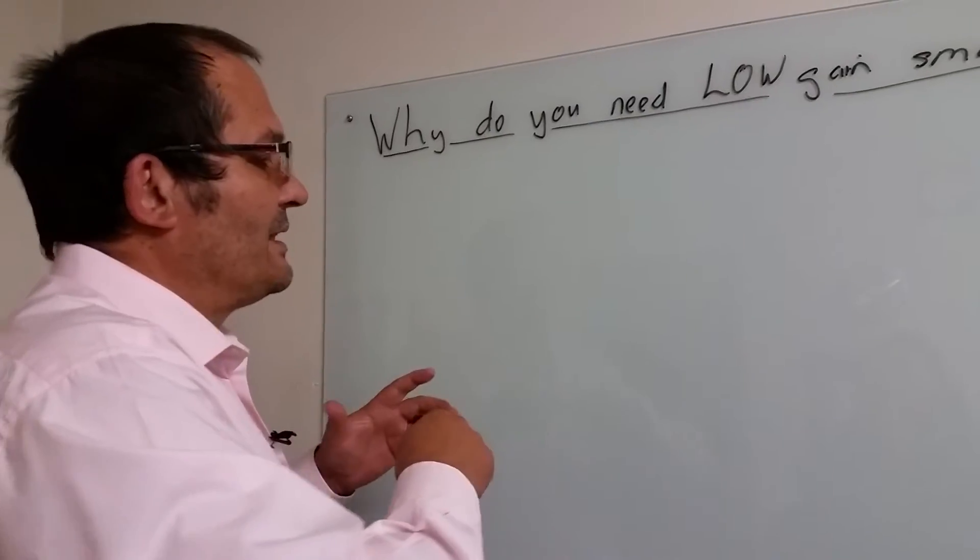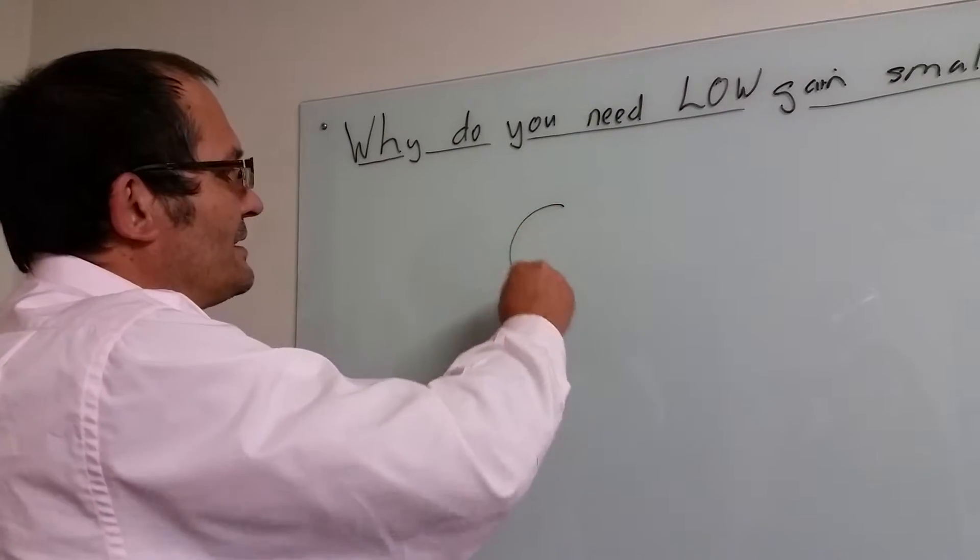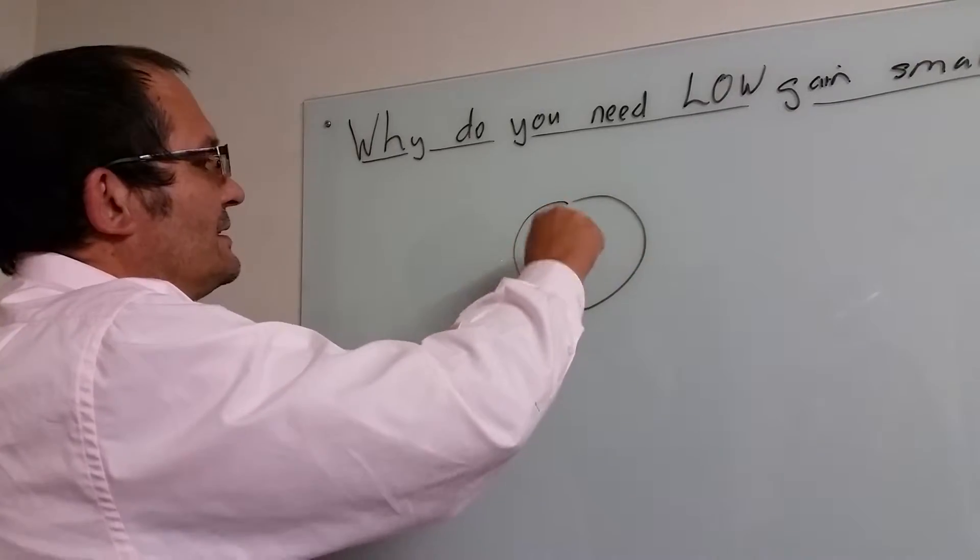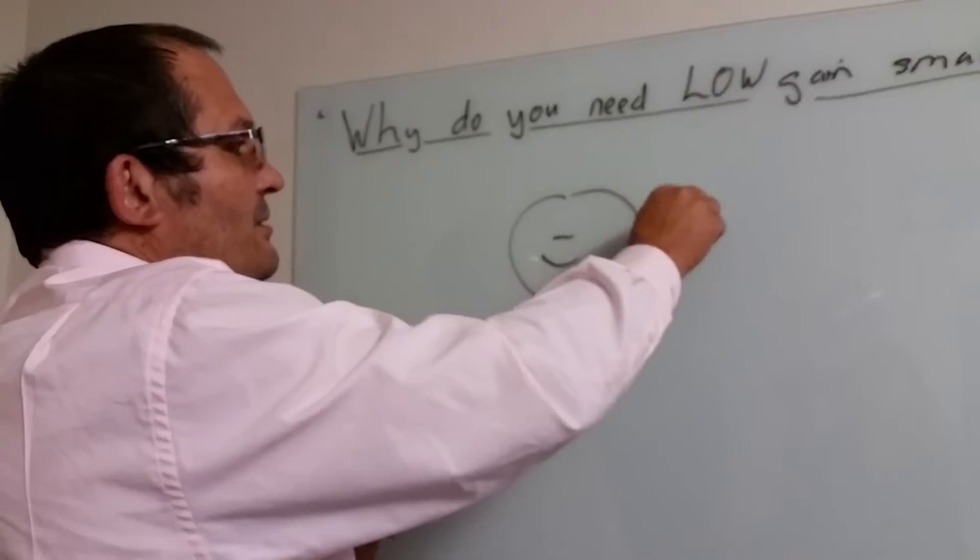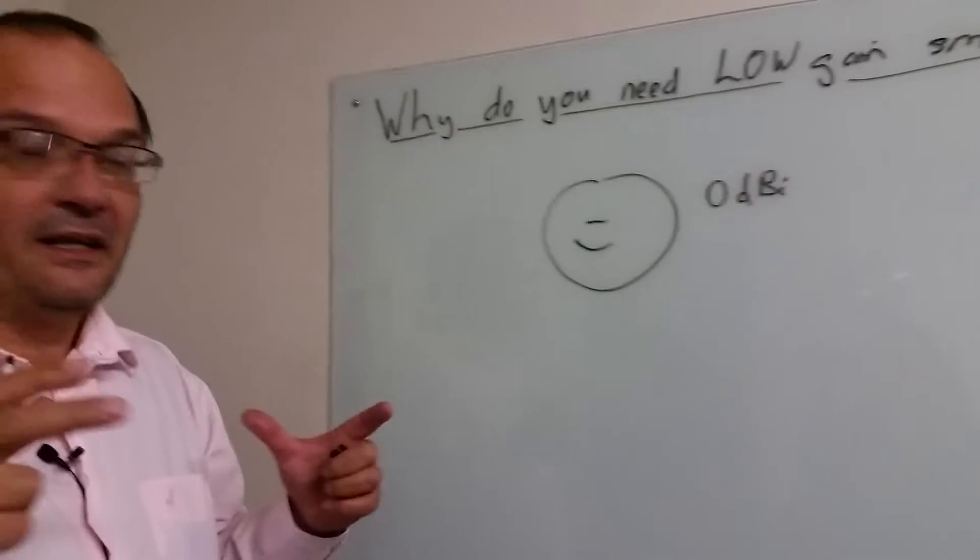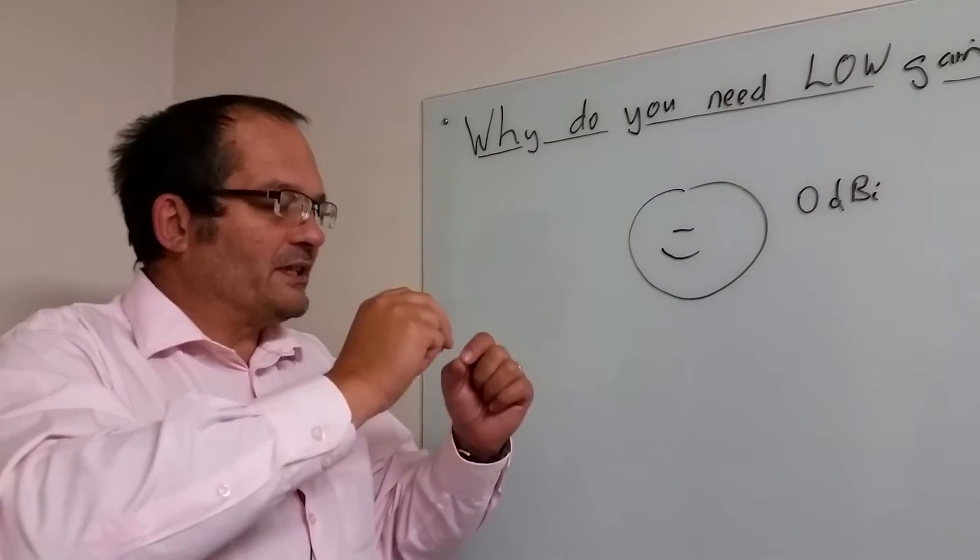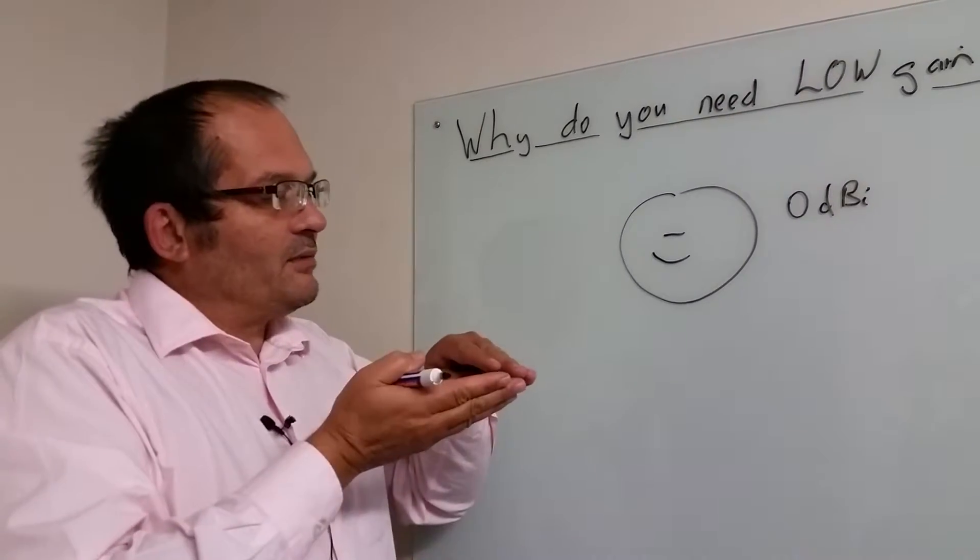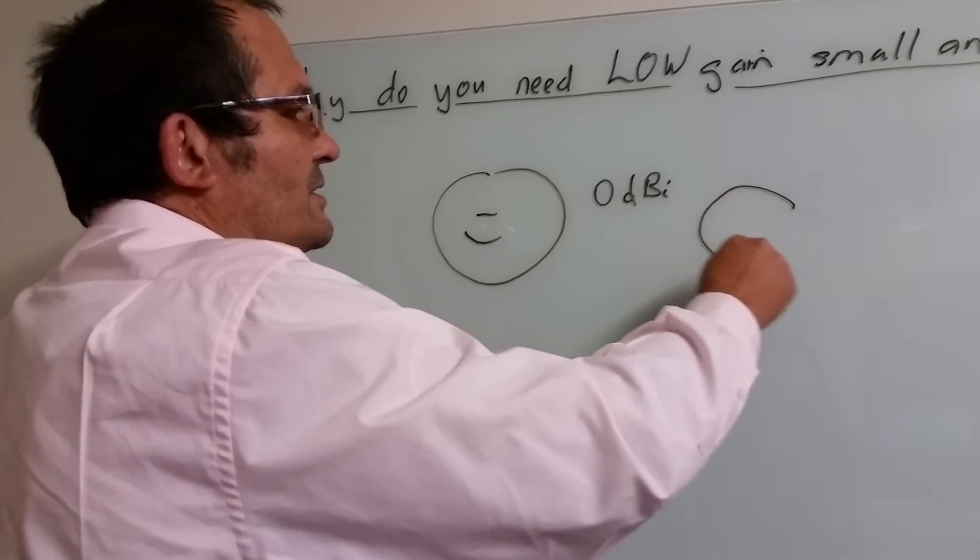The reason why low gain is the best goes back to my explanation of gain, which says that something that radiates in all directions in three dimensions, like a balloon, has got a gain of zero dBi. Nothing wrong with that. It means it very effectively radiates in all directions. Gain is achieved by squashing, in other words by taking signal away somewhere and putting it somewhere else.